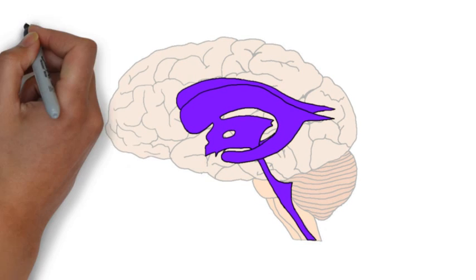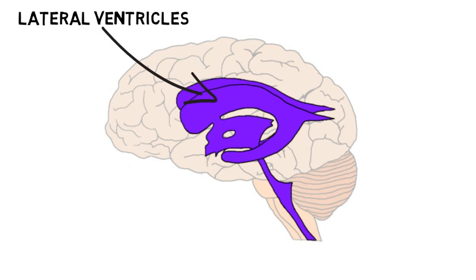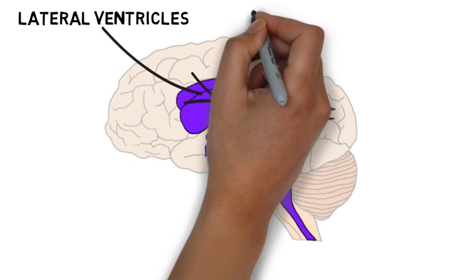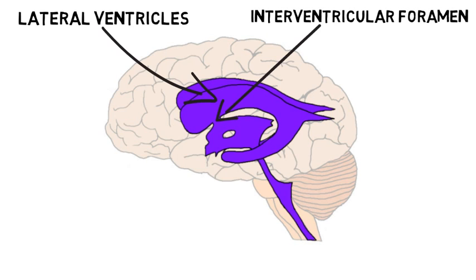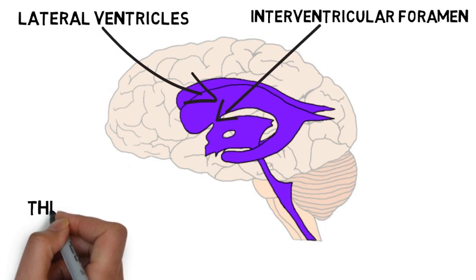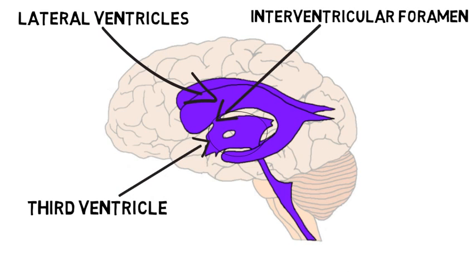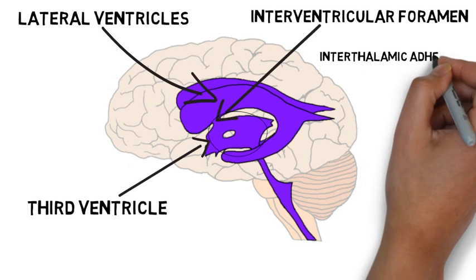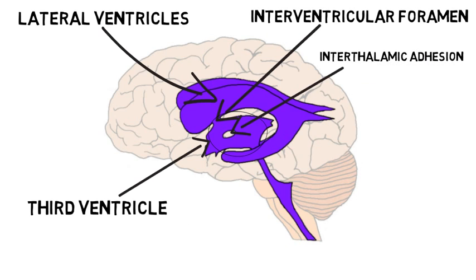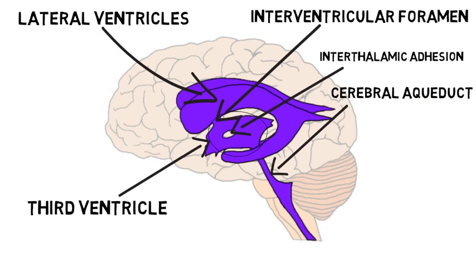There are four ventricles. There are two C-shaped lateral ventricles, one in each of the cerebral hemispheres. The lateral ventricles are connected to a third ventricle by an opening called the interventricular foramen. The third ventricle is a narrow cavity that runs along the midline of the diencephalon. It looks something like a misshapen donut, and the section that would be the hole of the donut is an area known as the intrathalamic adhesion. In this section, the thalamus makes up the wall of the third ventricle.